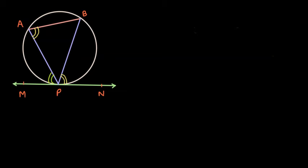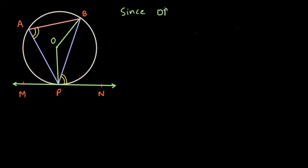Let us first draw the center of this circle. Let us assume this is the center O, and I want to draw the radii — so OP and OB are the two radii. Since OP is the radius and MN is the tangent, and P is the point where the radius and tangent meet, we know that OP is perpendicular to MN, and therefore angle OPN is 90 degrees.